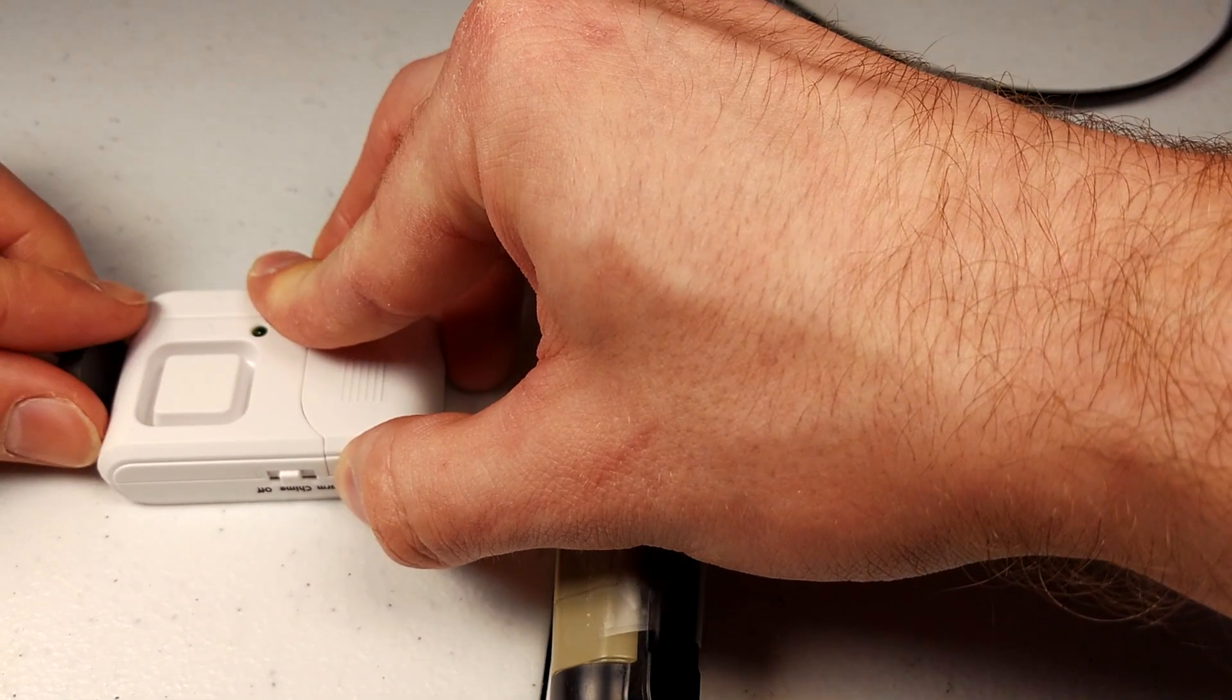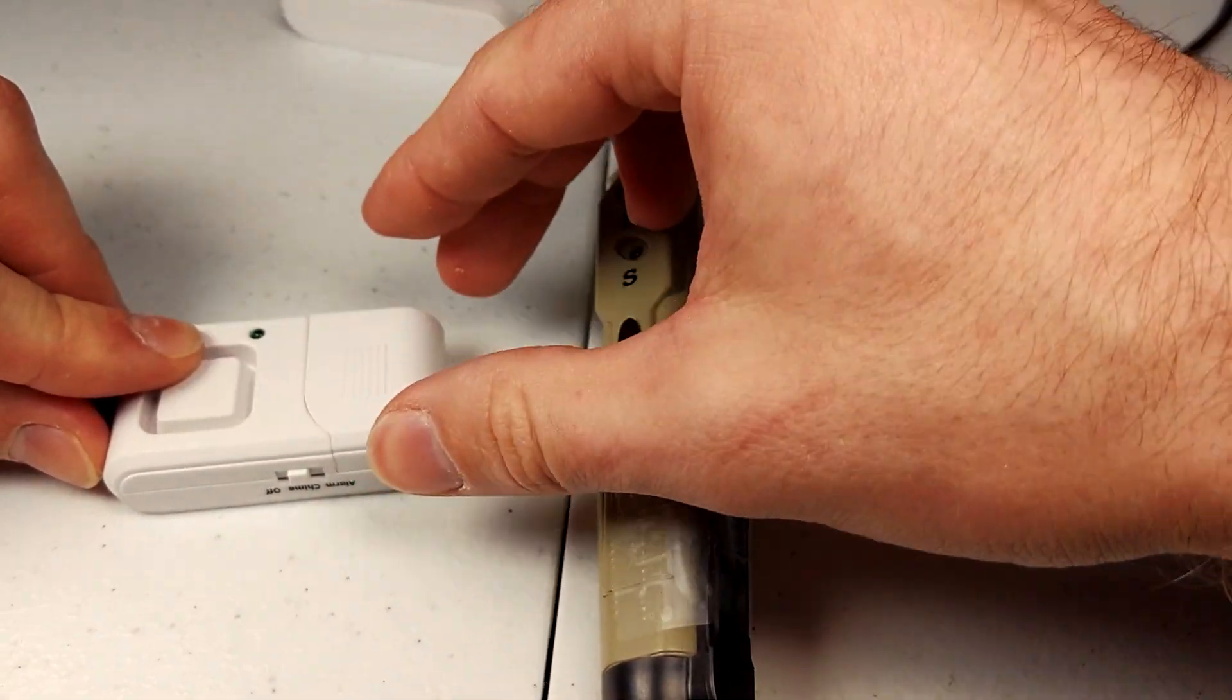So as long as we mimic the sensor's original magnetic field, we can fool the sensor into thinking that the door is still closed.